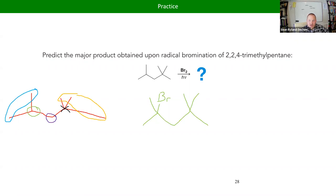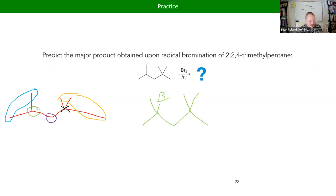Bromine is a nice middle-of-the-road reagent: it reacts more quickly than iodine but not as quickly as chlorine or fluorine, it's a good leaving group — a better leaving group than chlorine — and it's easier to work with than iodine. So for a lot of synthesis work, we see bromine used for that reason.